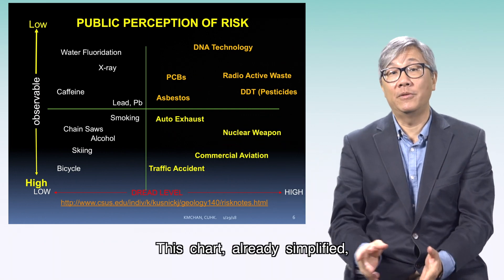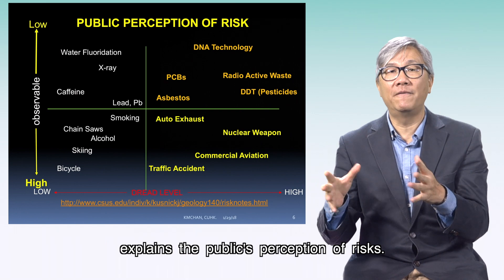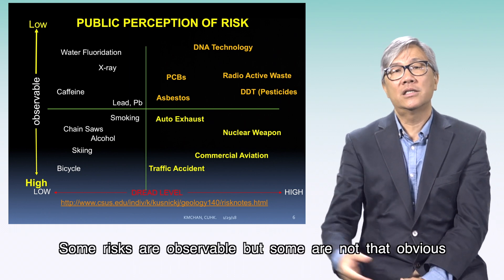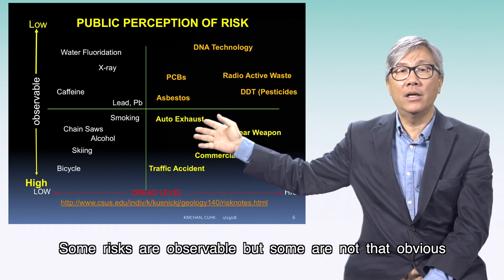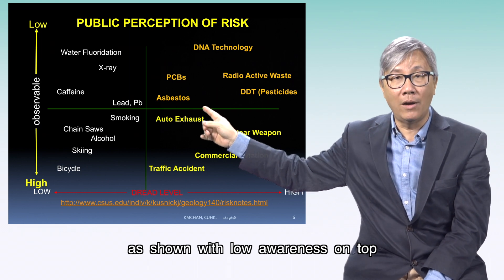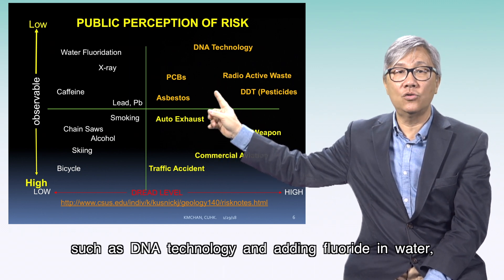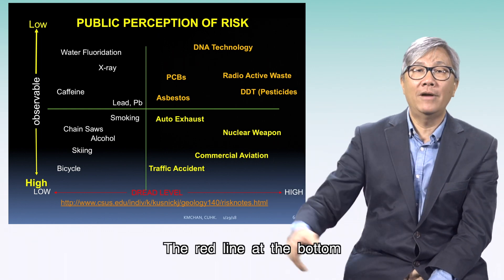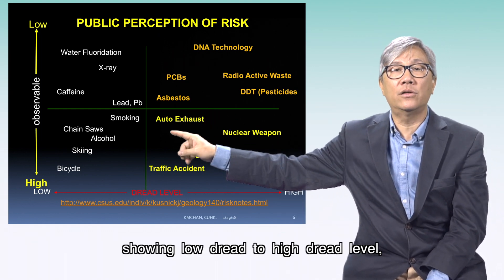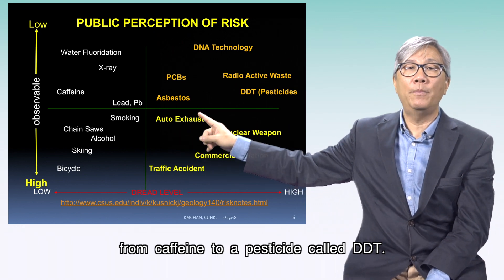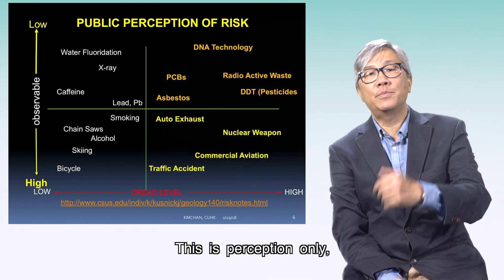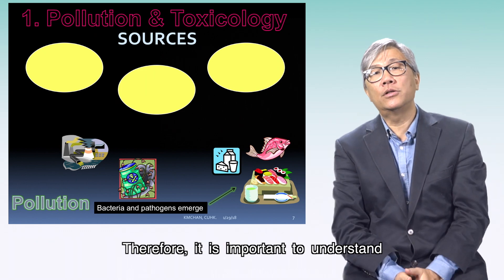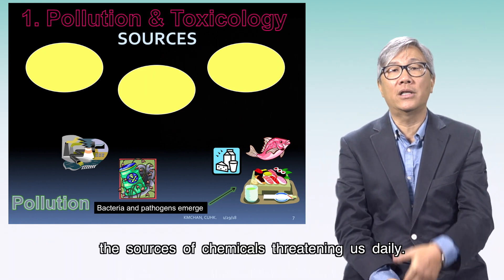This chart explains the public's perception of risk. Some risks are less dangerous, but the public's perception may think otherwise. Some risks are observable, but some are not that obvious — shown with low awareness on top, such as DNA technology and adding fluoride in water, going down to more observable risks like bicycle. The red line at the bottom shows low dread to high dread level from caffeine to a pesticide called DDT. This is perception only, not necessarily the actual health risks.